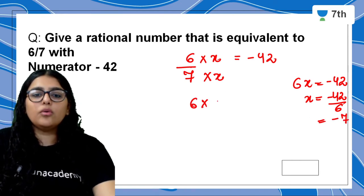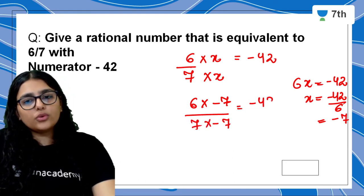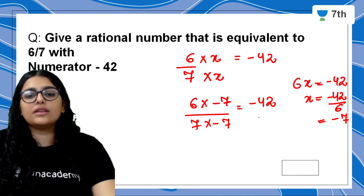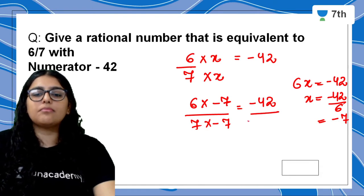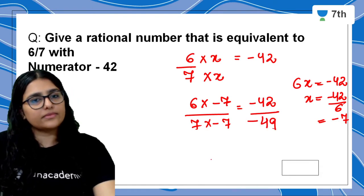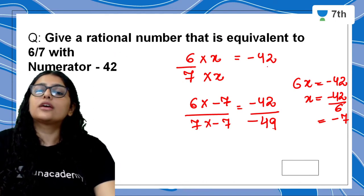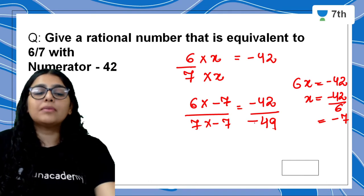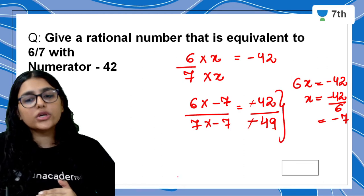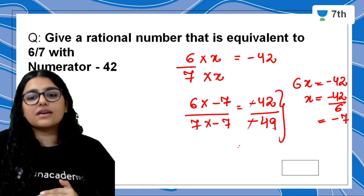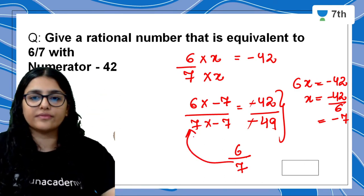So this is 6 into minus 7 upon 7 into minus 7. The numerator becomes minus 42, and 7 times 7 is 49, so the denominator also becomes negative: minus 49. If the numerator is minus 42 and denominator is minus 49, both negatives cancel and when you take the lowest form — 7 times 6 is 42 and 7 times 7 is 49 — you get the original number back, which was positive.